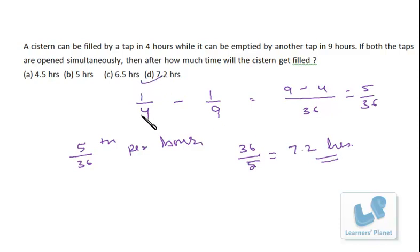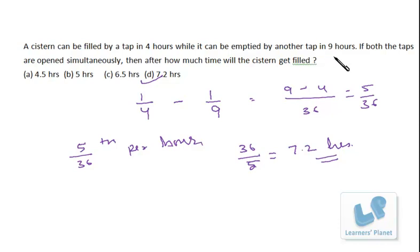We should be very clear that the first pipe is working as an inlet pipe and the second pipe is working as an outlet pipe. The capacity of the second pipe is to empty a completely filled up tank — it can be emptied by this particular tap in 9 hours. So both pipes working simultaneously means one is filling and one is emptying — positive work and negative work — that's why we put a negative sign.